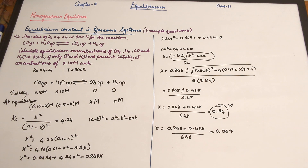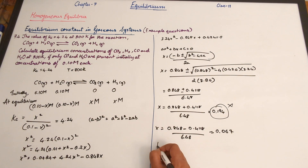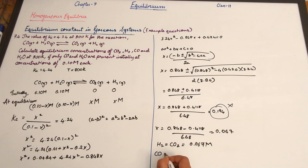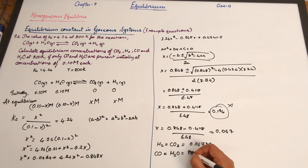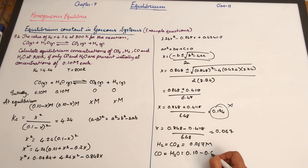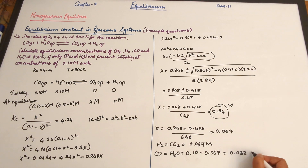So the equilibrium concentrations are: [H₂] = [CO₂] = 0.067 molar, and [CO] = [H₂O] = 0.10 minus 0.067 = 0.033 molar.